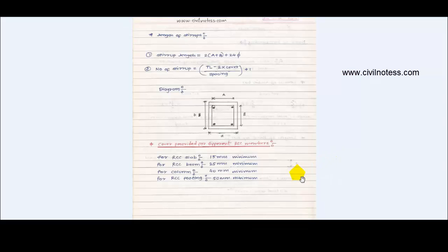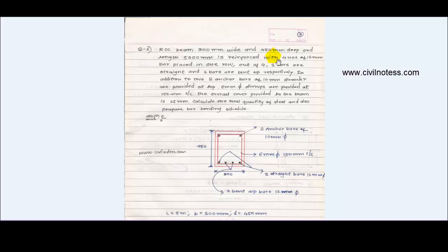Now let's start the numerical. Here is a numerical: an RCC beam of 300 mm wide and 450 mm deep, with a length of 5000 mm, is reinforced with four numbers of 12 mm bars placed in one row. Out of four bars, two are straight and two are bent up respectively.